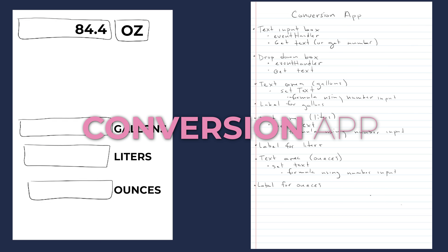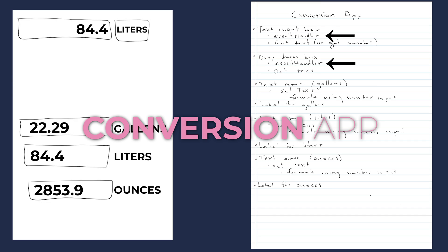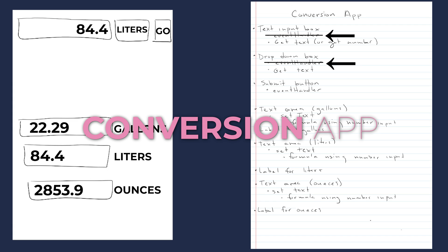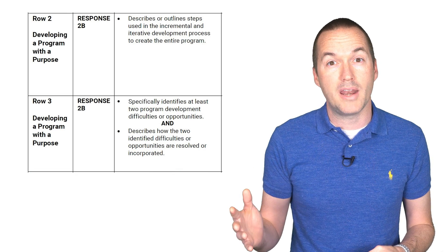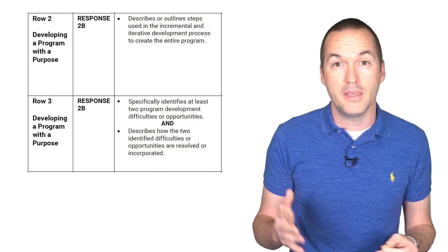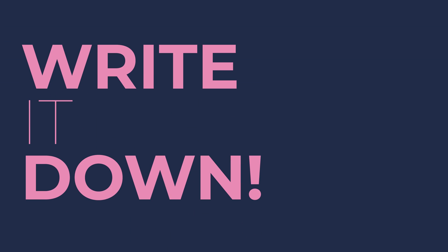To interact with this program, users will type in a number value and then select the starting unit. Thinking forward to my code, this design would need event handlers to monitor both the number input and unit drop-down for any change. To reduce the complexity of my code, decrease the number of event handlers required, and also increase the user experience, I'm going to add one additional button called 'calculate' that will trigger the calculations instead of relying on event handlers for the text input and drop-down box. This is a perfect example of a design decision that I could write about in my reflection for part 2b, row 3 on the rubric, so I'll make a note of it for when I write my responses.